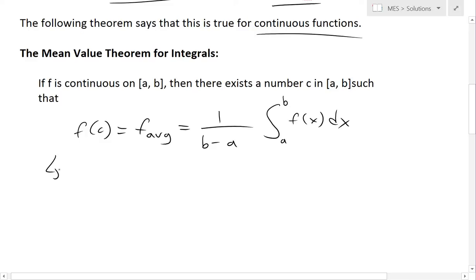Now you could write this as, if you just rearrange this, multiply the (b - a) on the left side, so you'll get the integral from a to b of f(x)dx is equal to f(c) times (b - a).